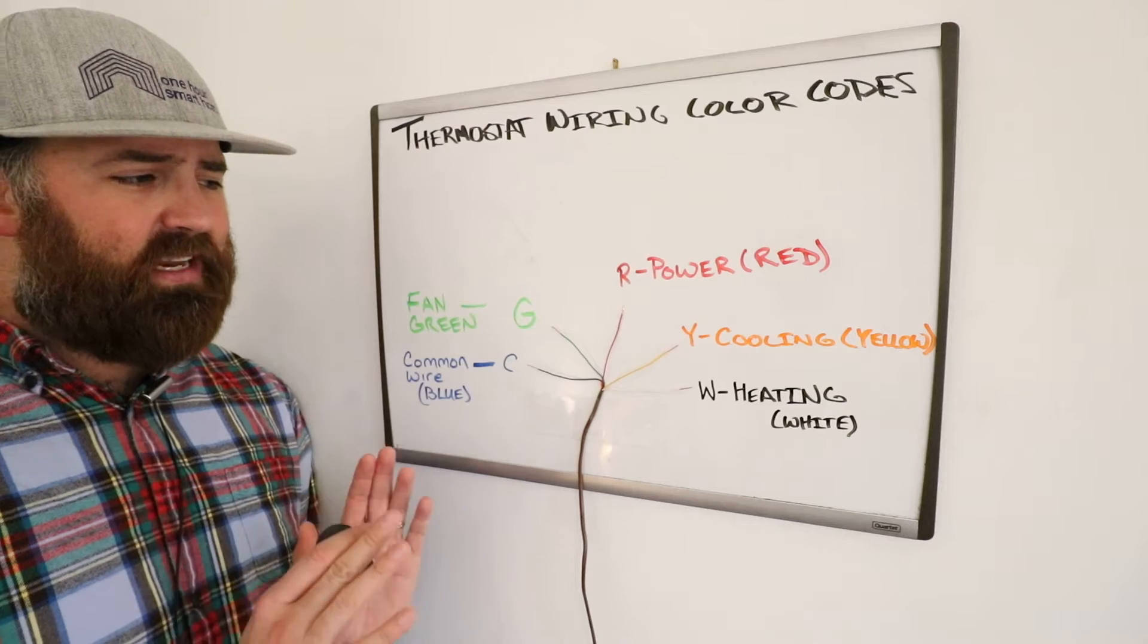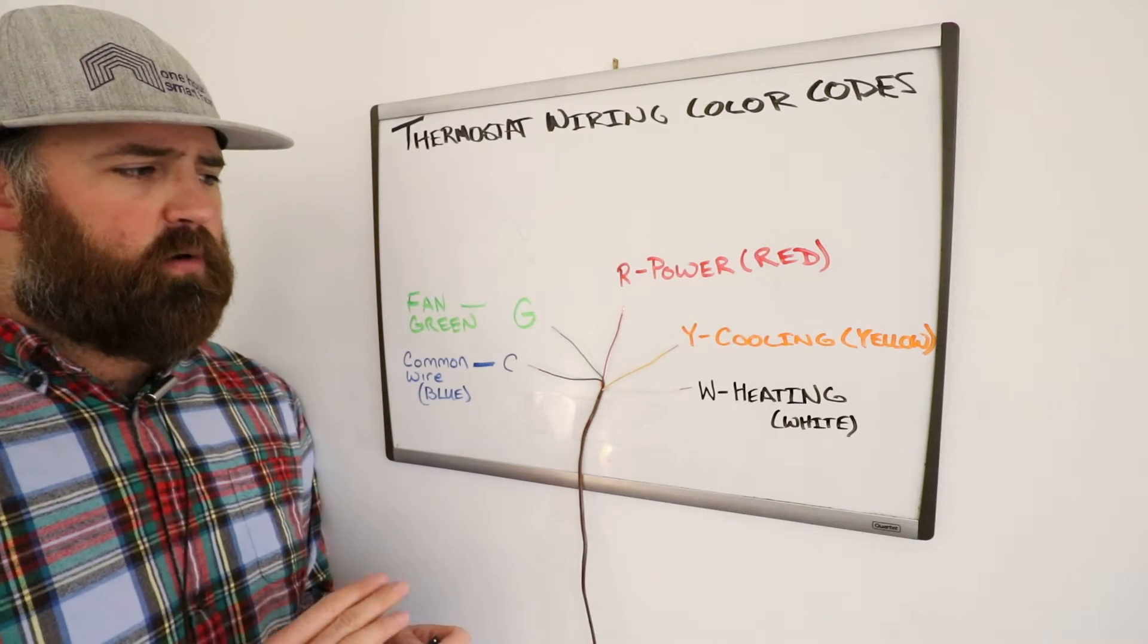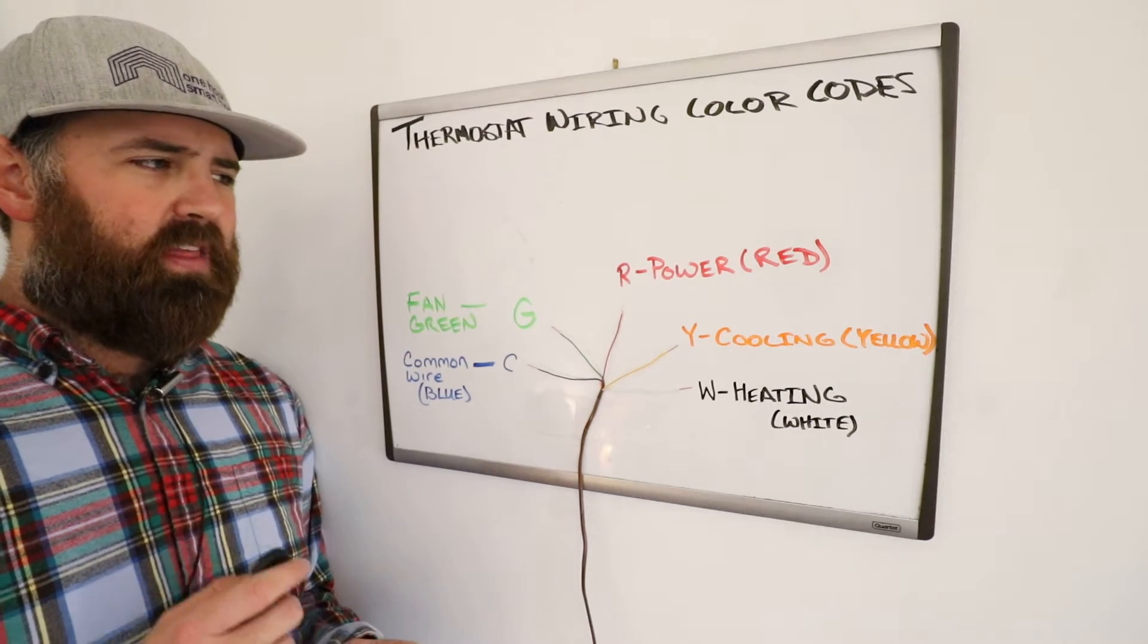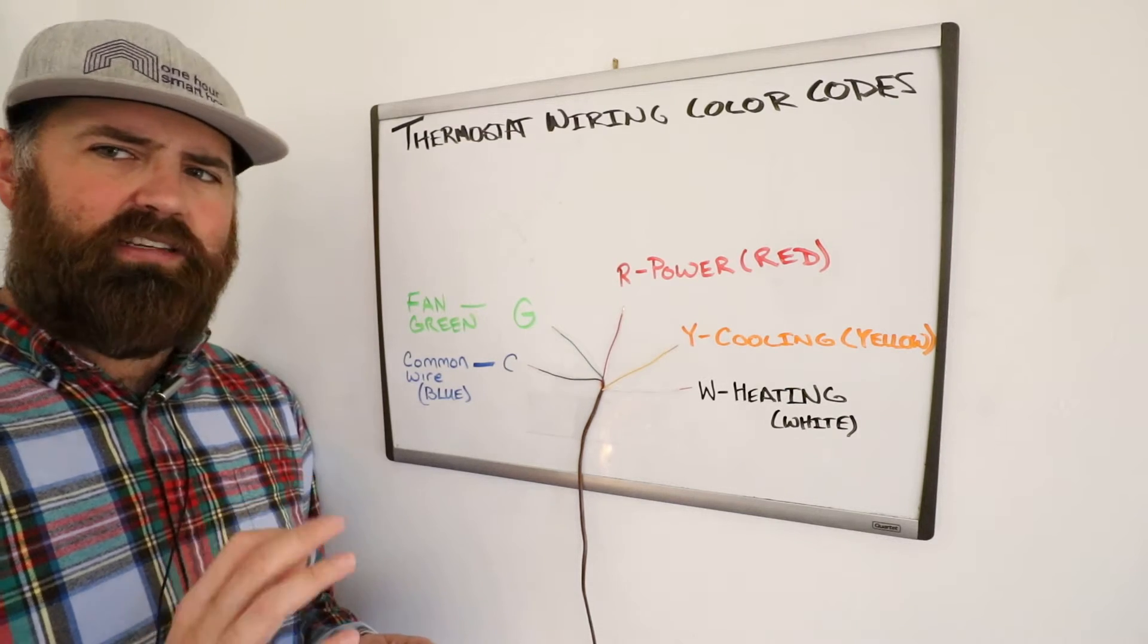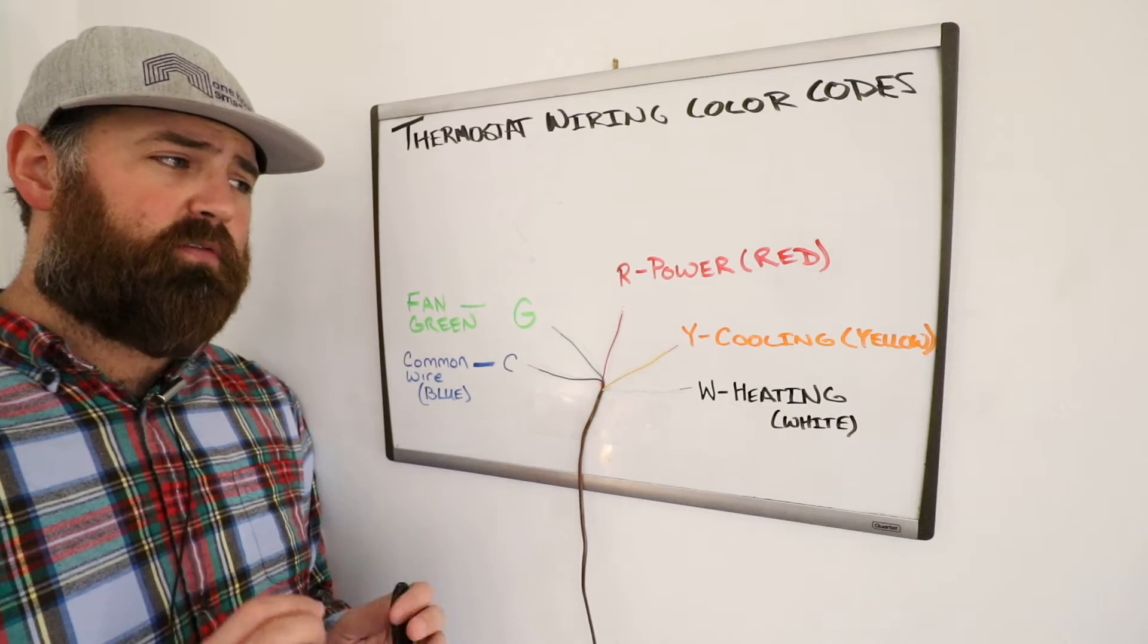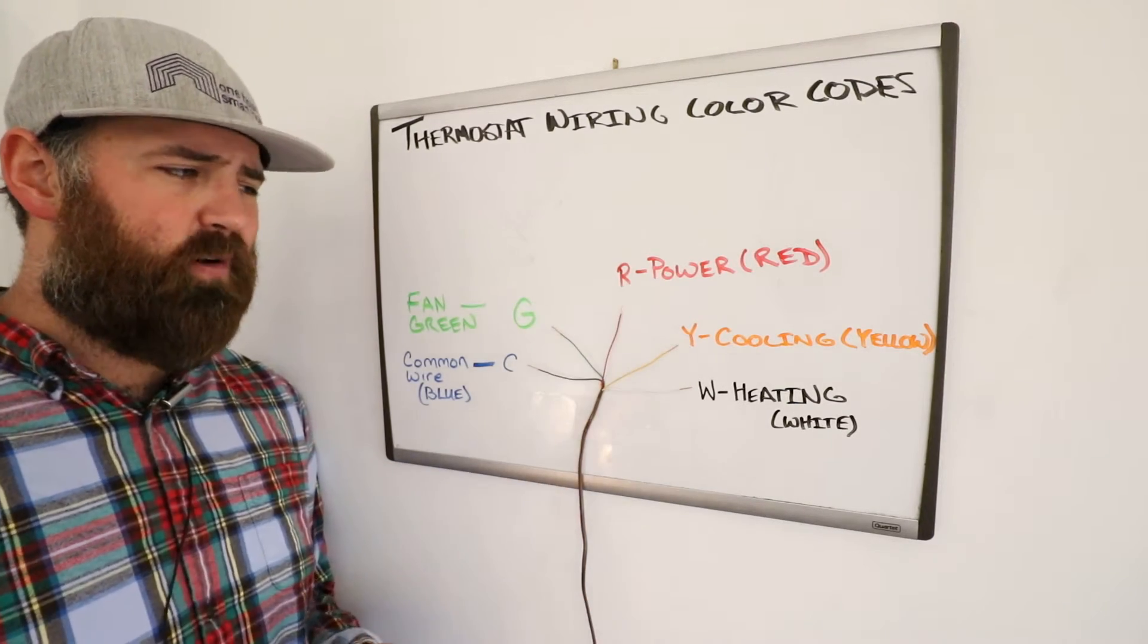So that is why we did this video, and the R-wire, which is right here in the center, is probably the most important wire. That is the power wire. So from your furnace, you're getting anywhere between 18 and 24 volts depending on your system. It should be 24 for most systems, but that's coming through the red wire or the power wire.